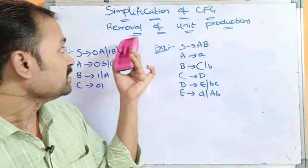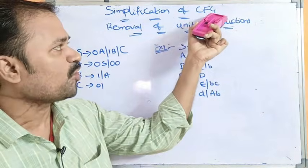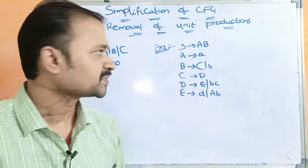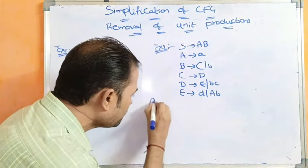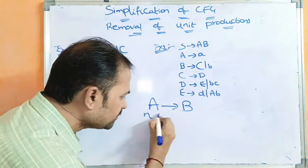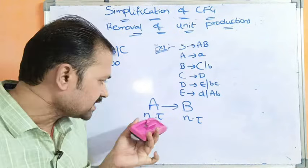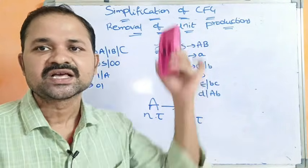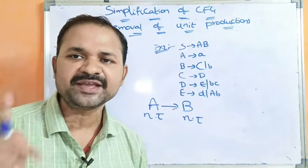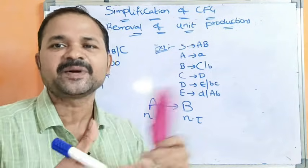Let us discuss the removal of unit productions in simplification of context-free grammar. A production is in the form A implies B, where A is a single non-terminal and B is a single non-terminal — then that production is treated as a unit production. The left-hand side should contain only one non-terminal and the right-hand side should contain only one non-terminal. Non-terminal means an uppercase letter.